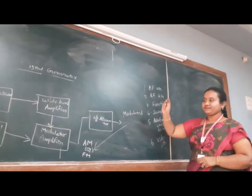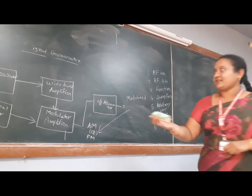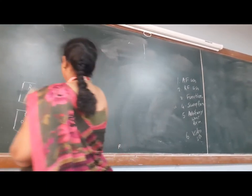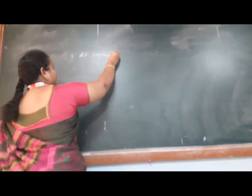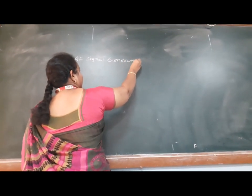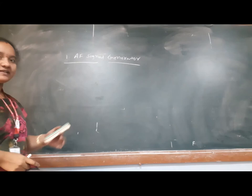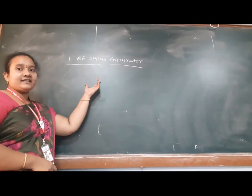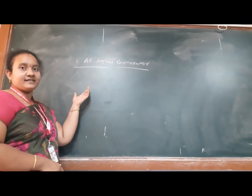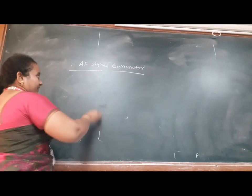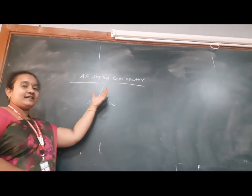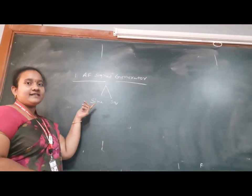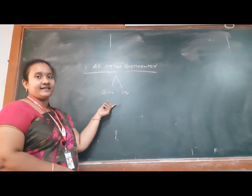Let's see the first one: AF signal generator. AF stands for audio frequency range. This signal generator produces signals having audio frequency range. The main purpose of the AF signal generator is it generates sine and square signals having audio frequency range.